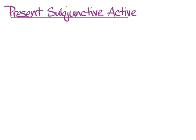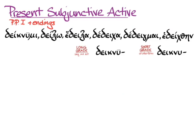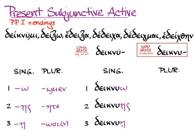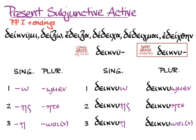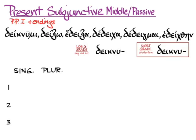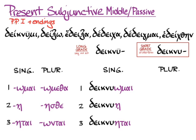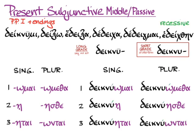Moving on to the subjunctive active — done with the indicative, so we only use the short-grade stem. Athematic verbs use the regular subjunctive endings on the short stem: deiknuō, deiknuēs, deiknuē, deiknuōmen, deiknuēte, deiknuōsi (with nu movable possible), with recessive accent. For the subjunctive middle/passive, same rule with short-grade stem and standard middle/passive endings: deiknuōmai, deiknuēi, deiknuētai, deiknuōmetha, deiknuēsthe, deiknuōntai — with recessive accents.